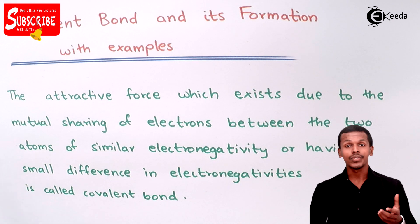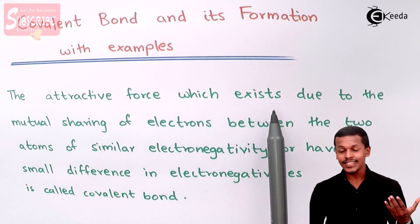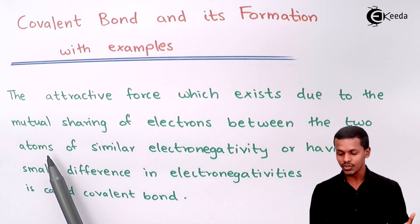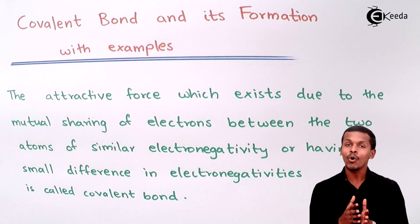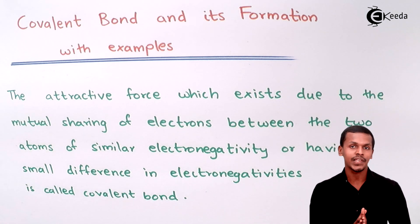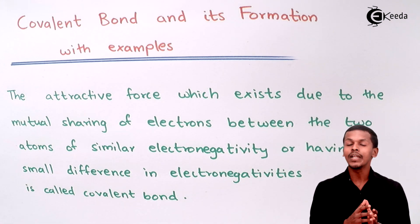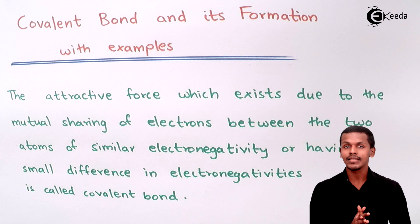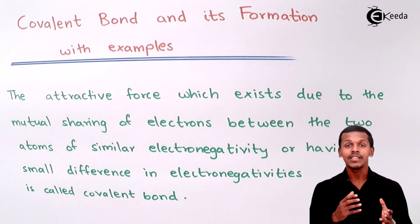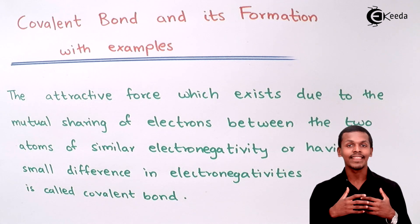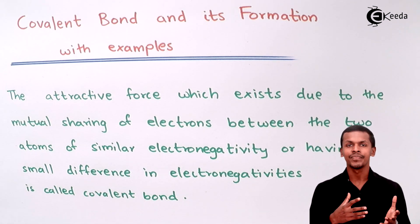Talking about the definition: the attractive force which exists due to the mutual sharing of electrons between two atoms of similar electronegativities, or having a small difference in their electronegativities, is called a covalent bond. So basically covalent bond is the bond formed between two atoms which have almost the same electronegativities, or there is only a small difference in their electronegativities. The main theme here is that it is not a transfer of electrons like in ionic bond — it is basically sharing of electrons.